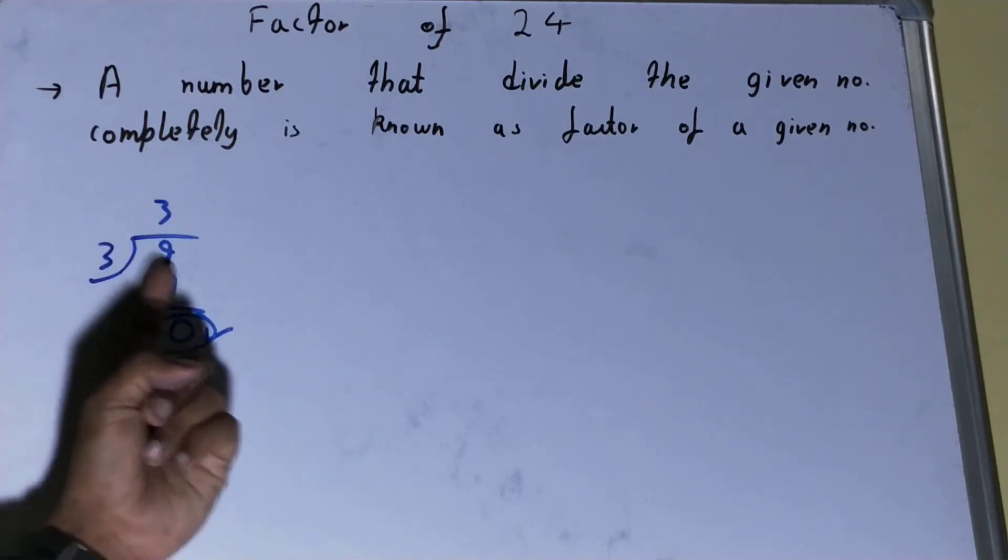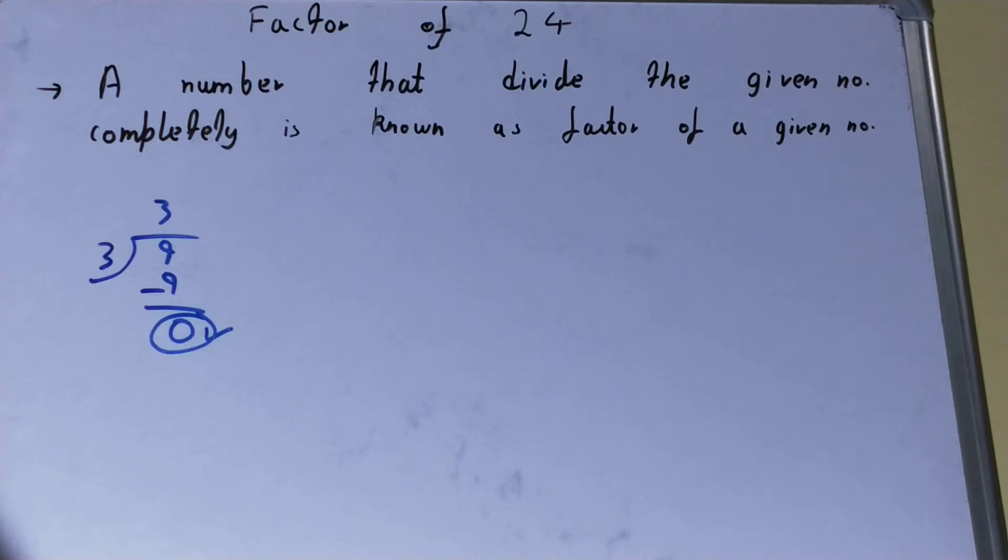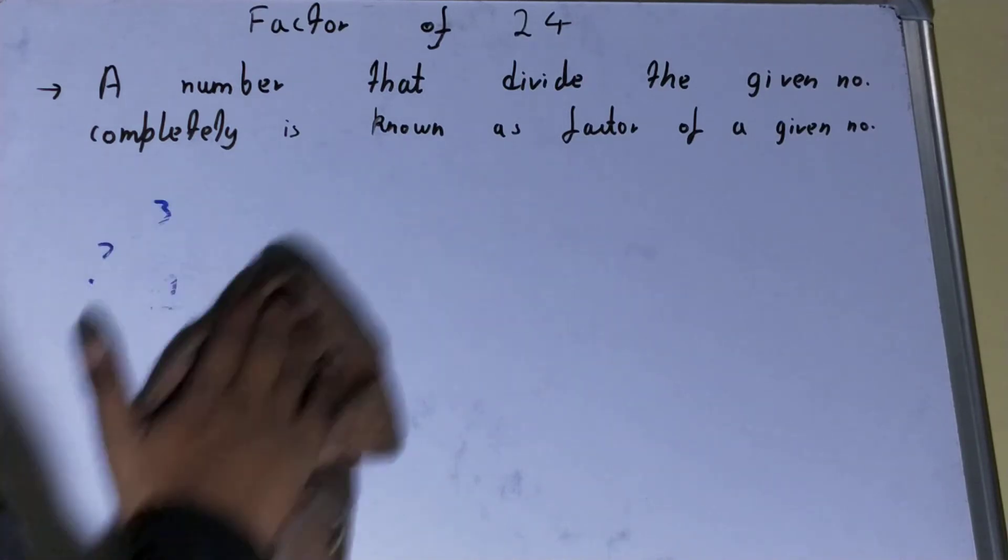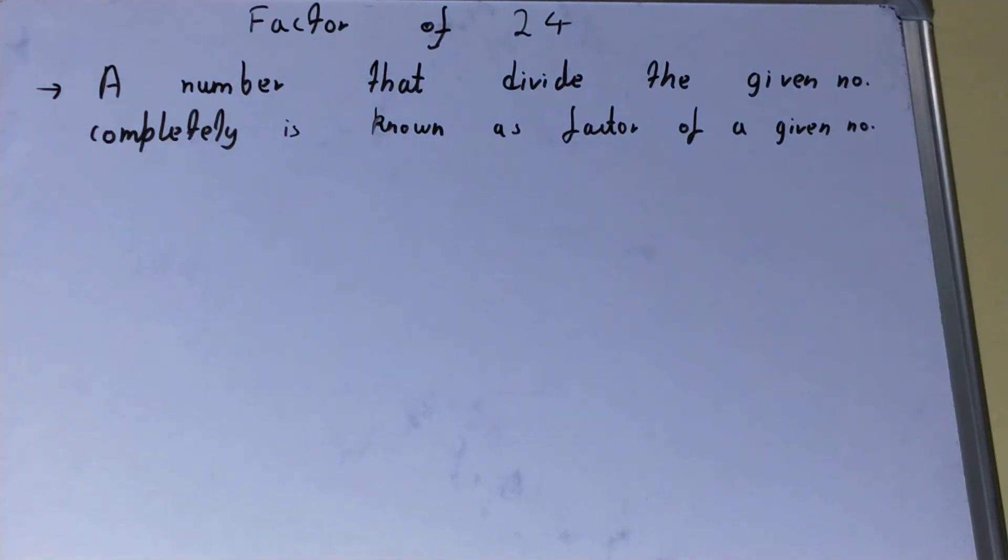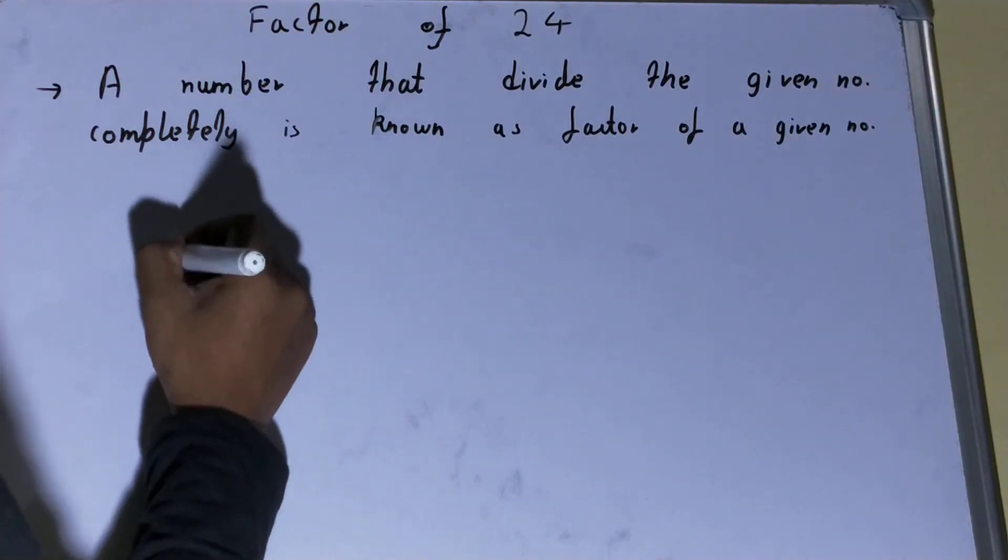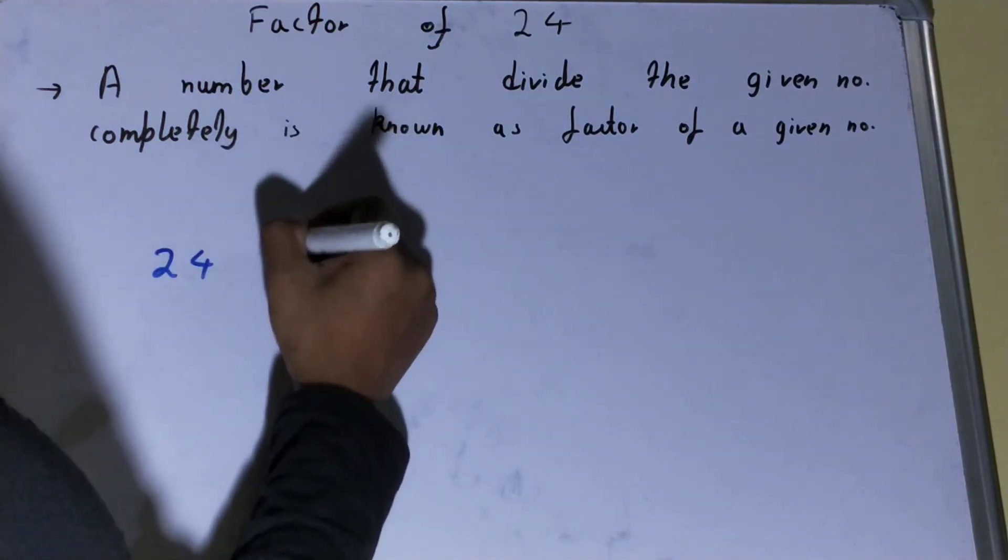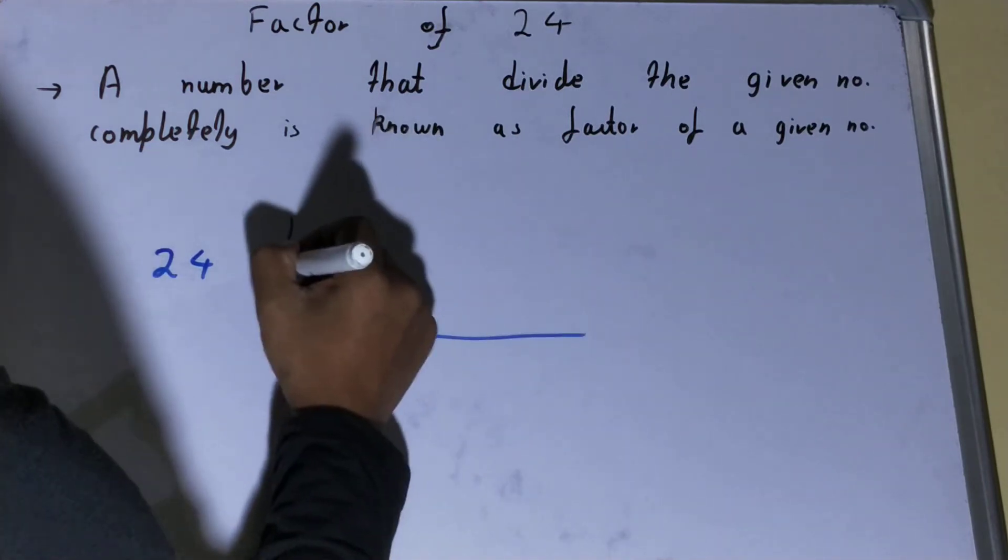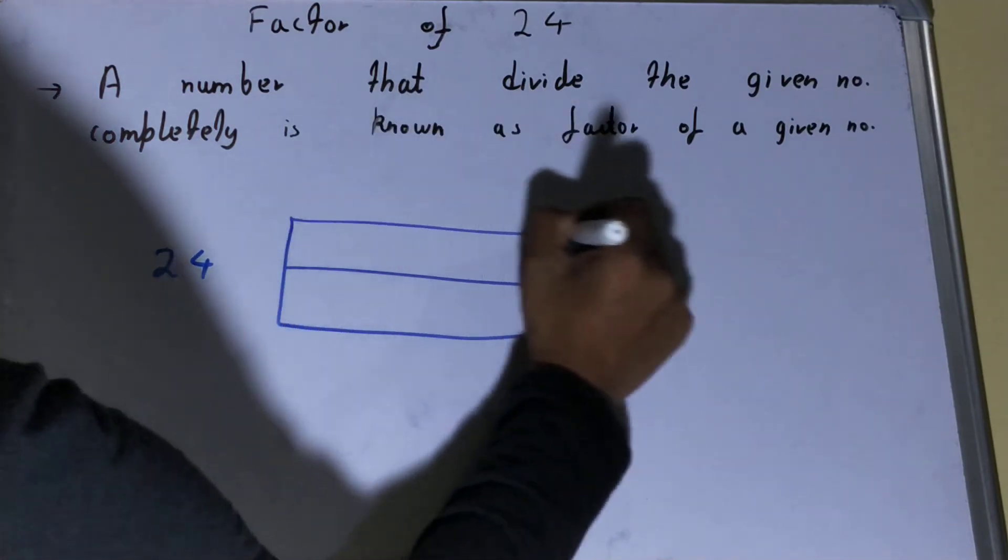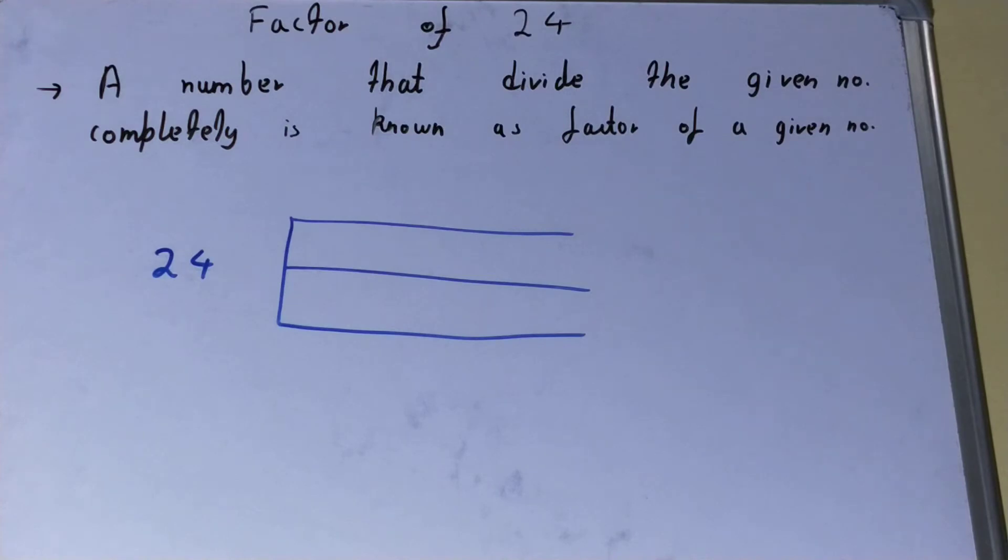This is how any number can be a factor of any other given number. All right, so we understood or we got the idea of what a factor is. Now let's find all the factors of the number 24. We'll draw a structure like this, and it is one of the easiest methods for finding out all the factors.